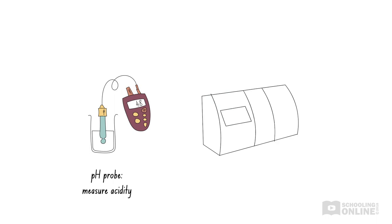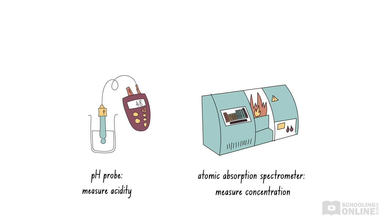When conducting experiments for the HSC chemistry course, you will need to know how to calibrate a pH probe, which is used to measure acidity, and the atomic absorption spectrometer, which is used to measure very small concentrations of substances. These processes are explained in the modules acid-base reactions and applying chemical ideas.